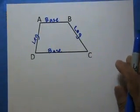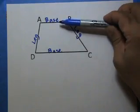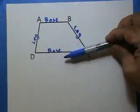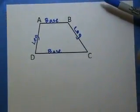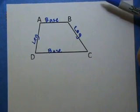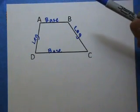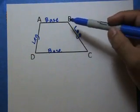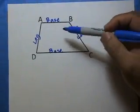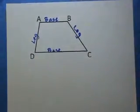So the first property of a trapezoid is that exactly one pair of opposite sides are parallel. The second property of a trapezoid is that exactly two pairs of consecutive angles are supplementary.